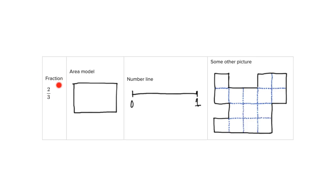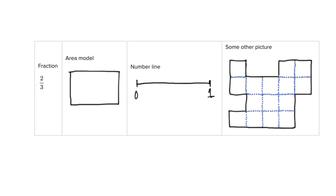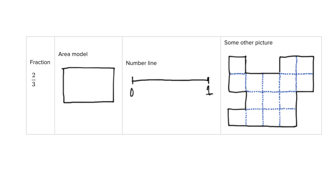Let's put this into practice. If we have the fraction two-thirds and we want to show what it looks like in an area model, the three means we need to cut our area into three pieces, and the two means we need to shade in two of them — one, two. That's the area model.